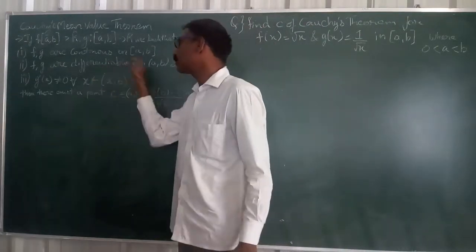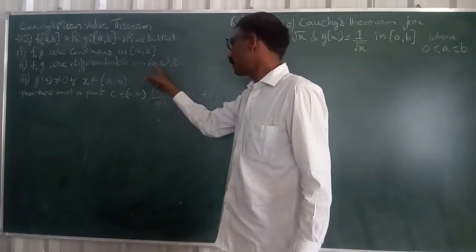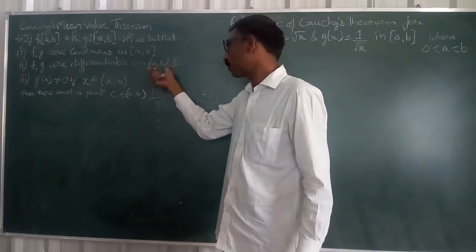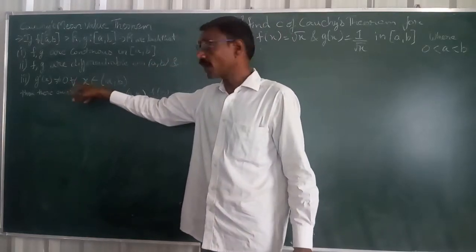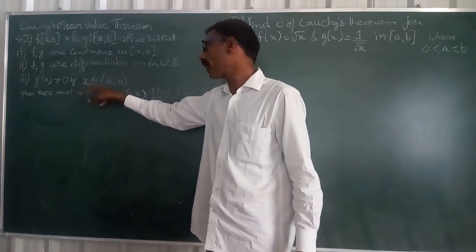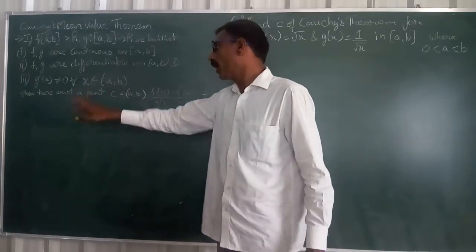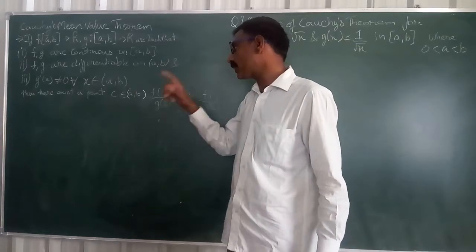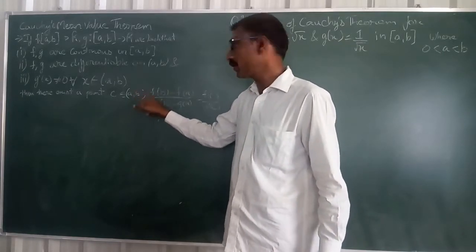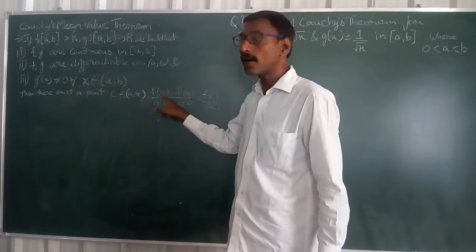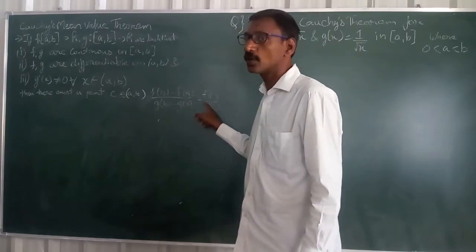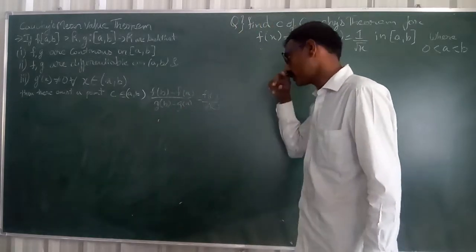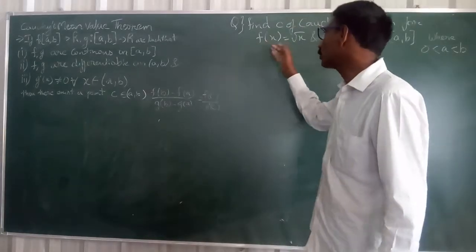f and g are differentiable on (A, B), means open interval A, B. g(x) is not equal to 0 for all x belongs to (A, B). There exists a point C belongs to (A, B), then note that [f(B) - f(A)]/[g(B) - g(A)] is equal to f'(C)/g'(C). So first we have to verify these two, because these two are continuous functions clearly.